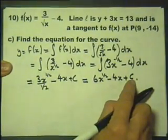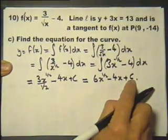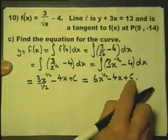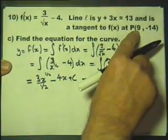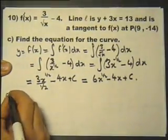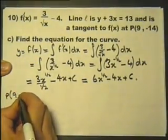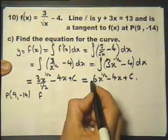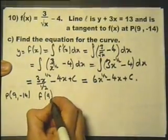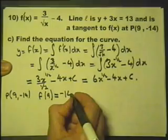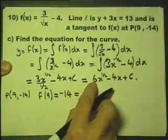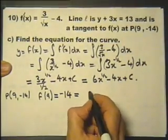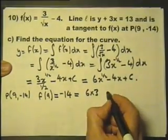Now we can work out the value of C, the constant of integration, if we've got suitable information. And we have got said suitable information because we know that the curve passes through that point. So P is (9, -14). In other words, if we take the function and substitute 9 into it, we will get ourselves -14. So let's substitute 9 into here.